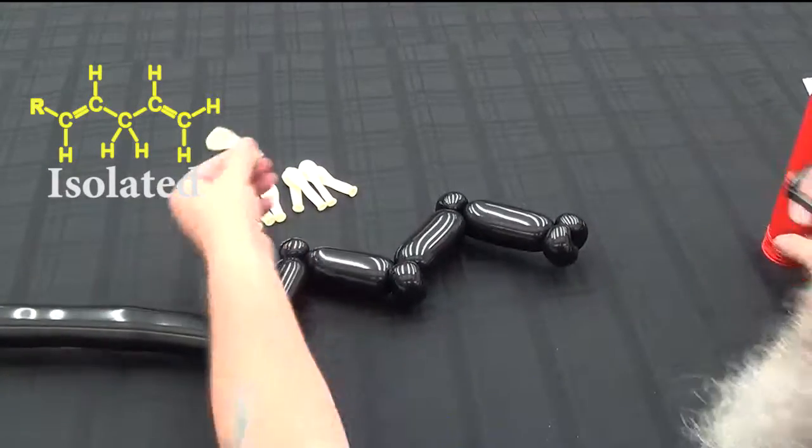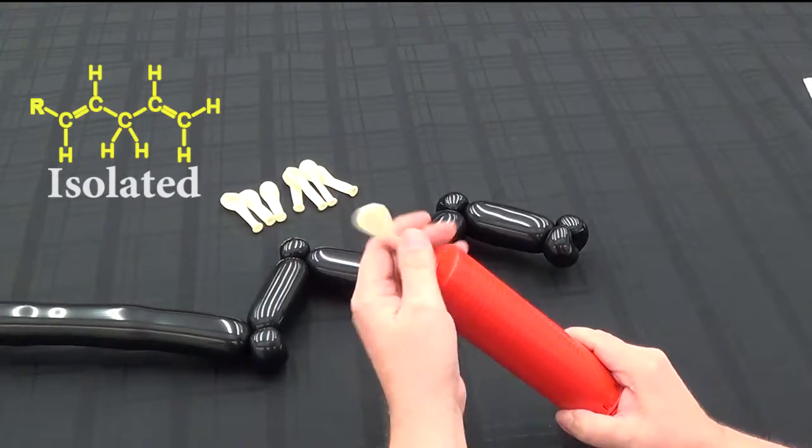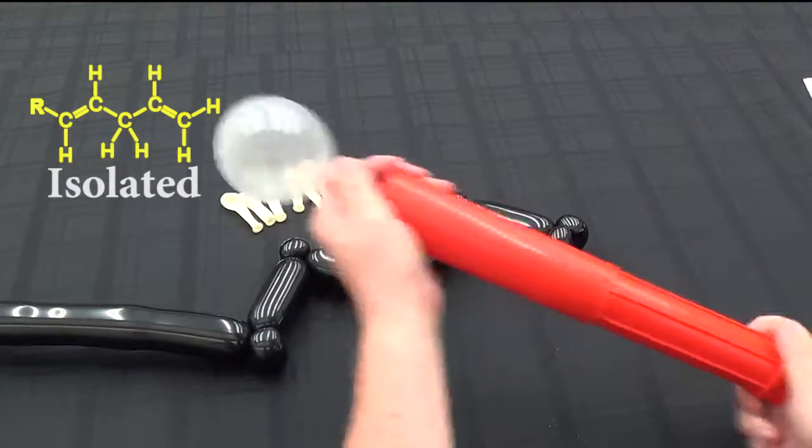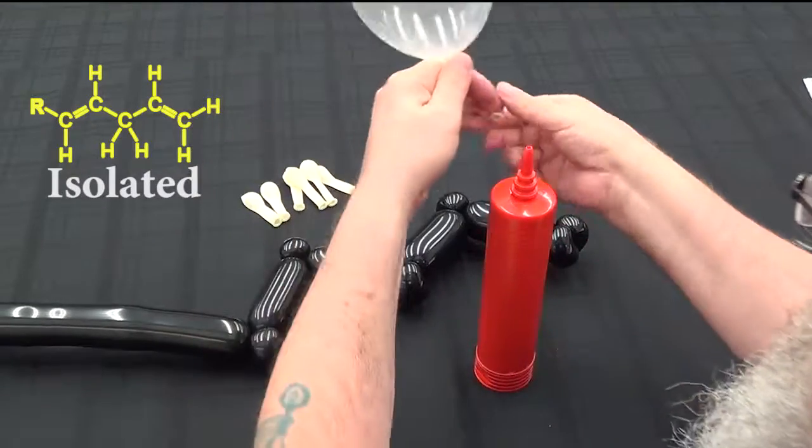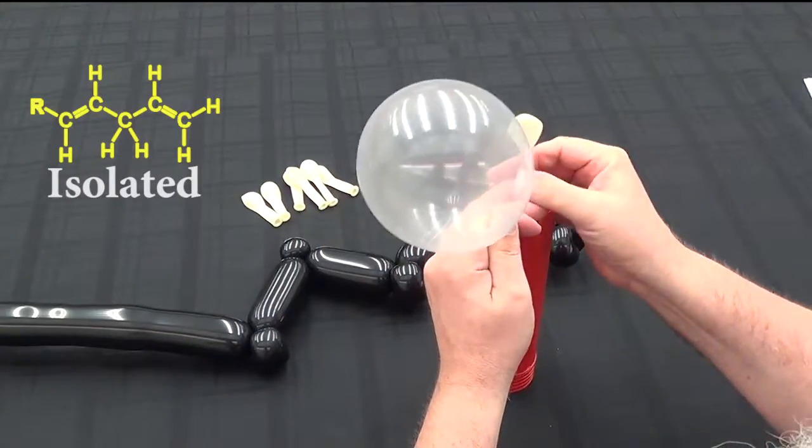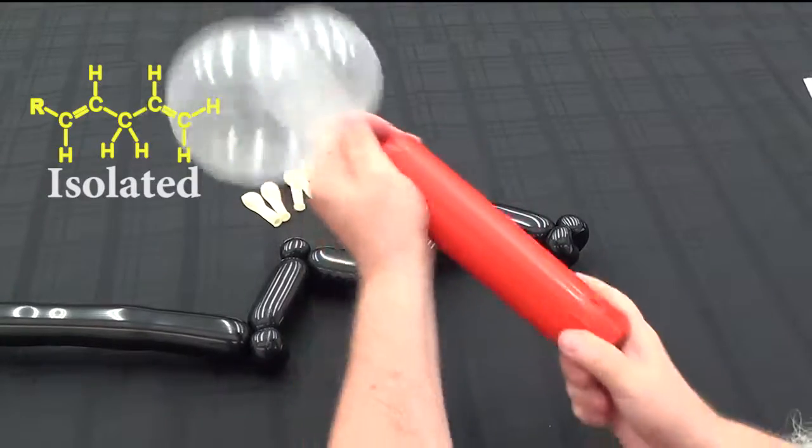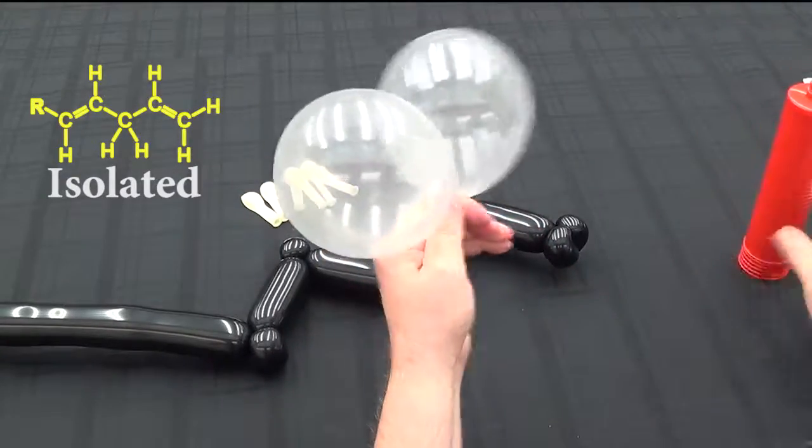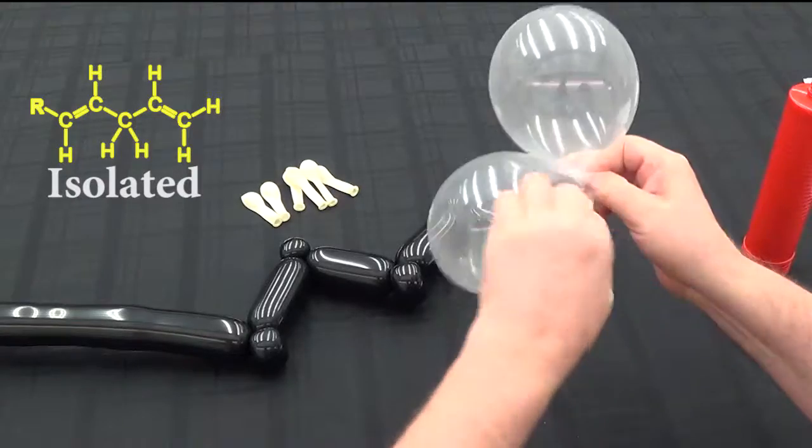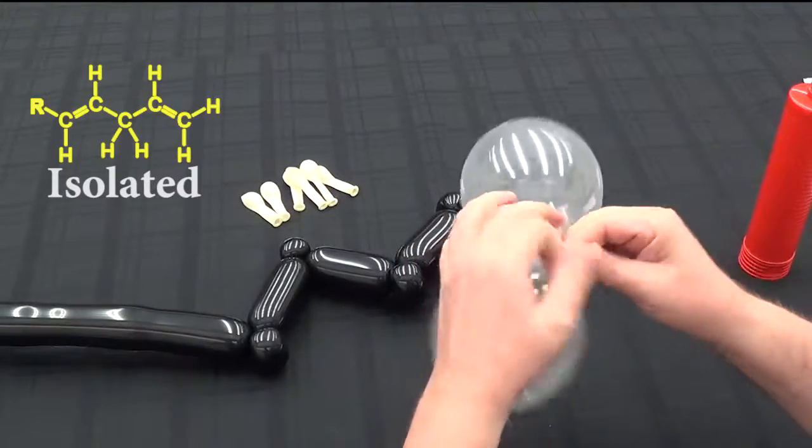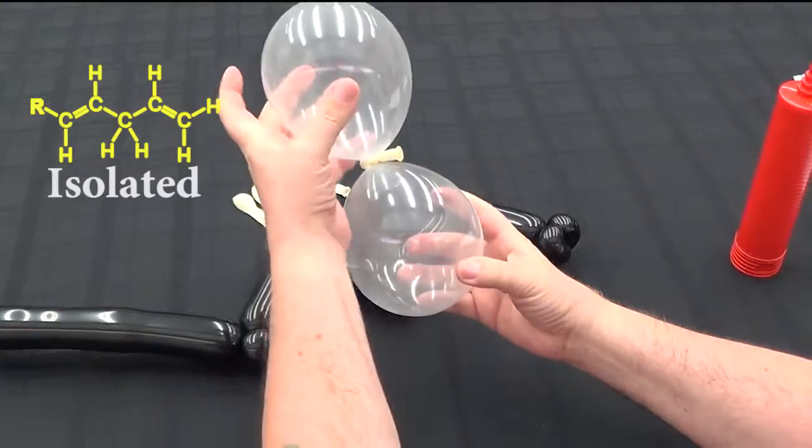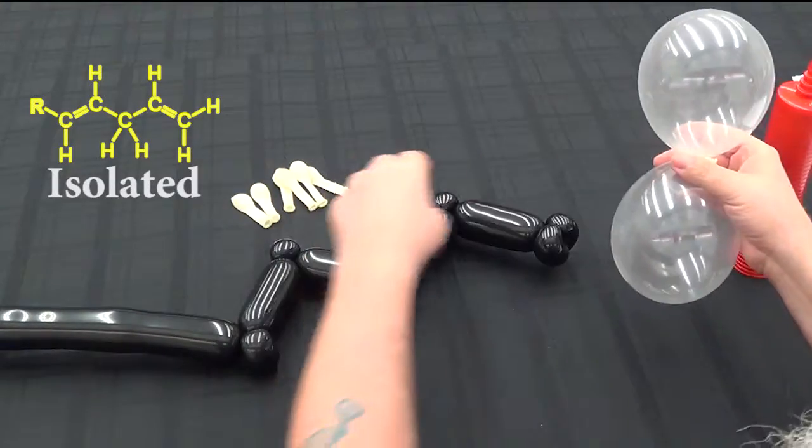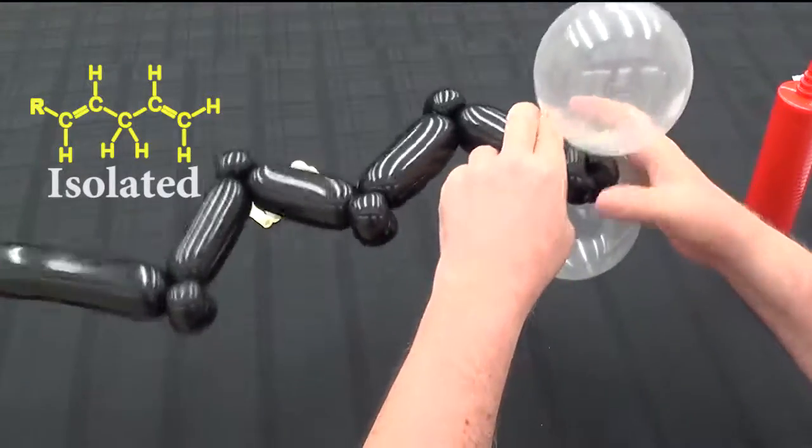We do that by taking the clear balloons. We put three pumps of air into each of those balloons. So there's one. And here's two. We tie those together. So that forms our orbital.